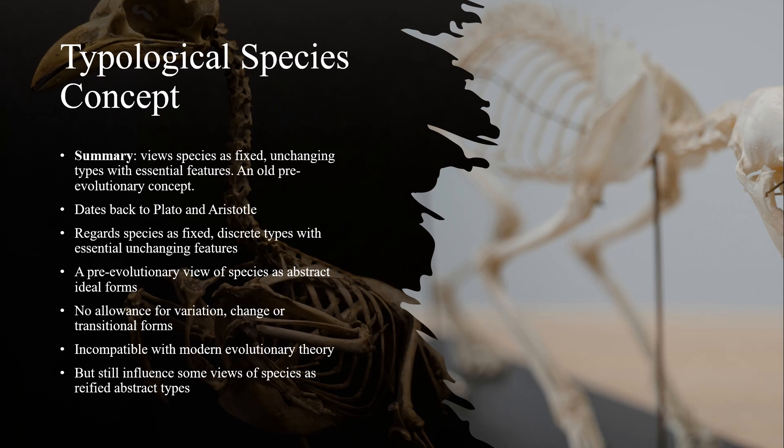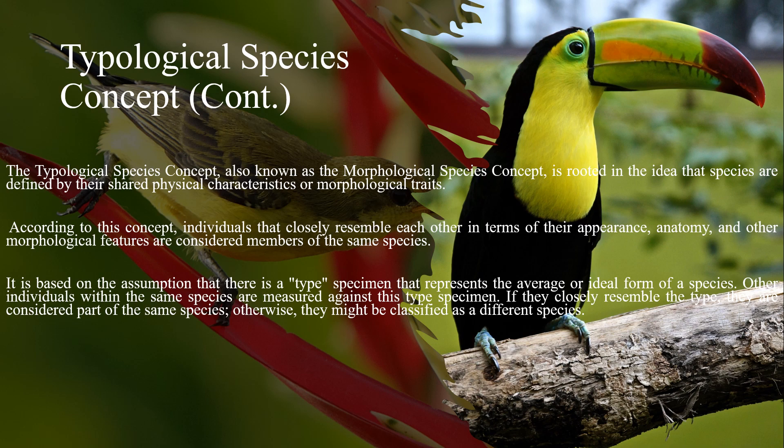The idea actually came up in taxonomy and biology before the idea of evolution appeared, dating back to very ancient times like the times of Plato and Aristotle. This concept regards species as fixed, discrete types with essential and unchanging features — a pre-evolutionary view of species as abstract ideal forms. It doesn't allow for any variation, change, or transitional forms, and is incompatible with modern evolutionary theory, but still influenced some views of species as refined abstract types. The typological species concept, also known as the morphological species concept, is rooted in the idea that species are defined by their shared physical characteristics or morphological traits.